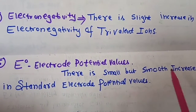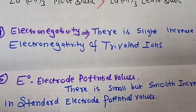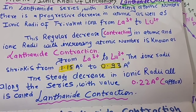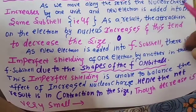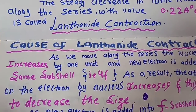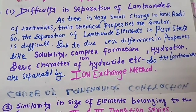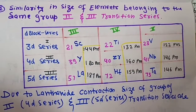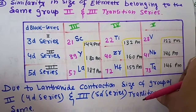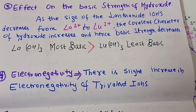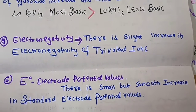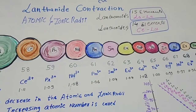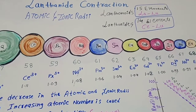There is also a small but smooth increase in the standard electrode potential values as a consequence of lanthanide contraction. To summarize, if it comes as a one-mark question write the definition and draw the diagram or graph; for a five-mark question explain lanthanide contraction, its causes, and its consequences in detail. If you like my video please share with your friends and classmates. Thanks for watching — do subscribe to my channel.